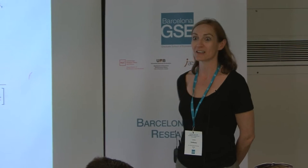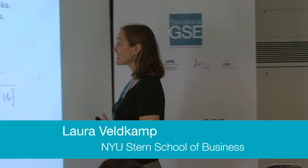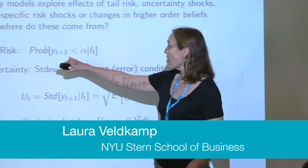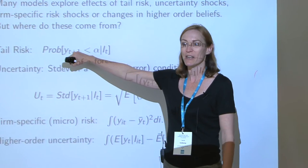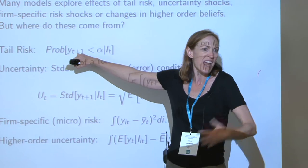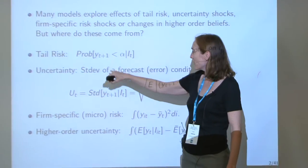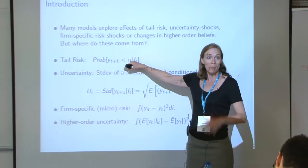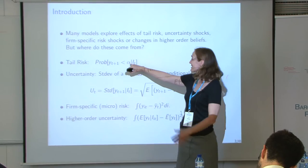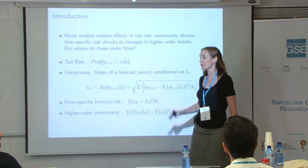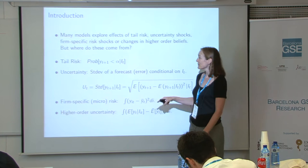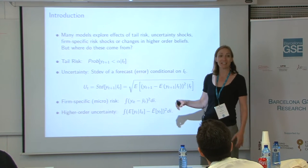Before I go any further, let me define some of the objects I'm going to talk about. I'll talk about tail risk: what's the probability that some outcome — think about GDP growth, or any macro variable — is less than some level alpha that's far below the mean. So the probability of some extreme event — that's what I mean by tail risk.